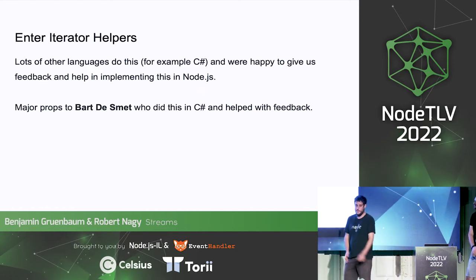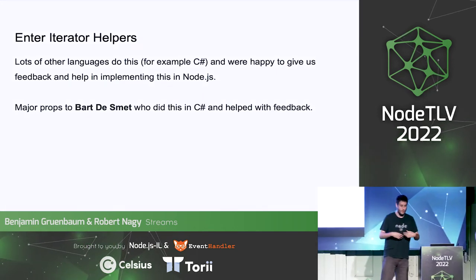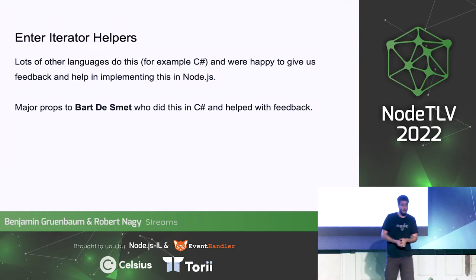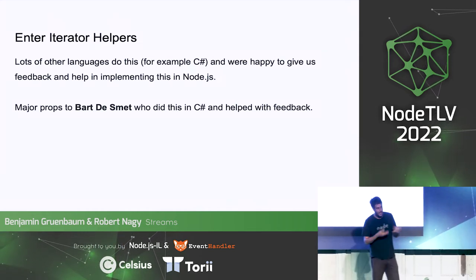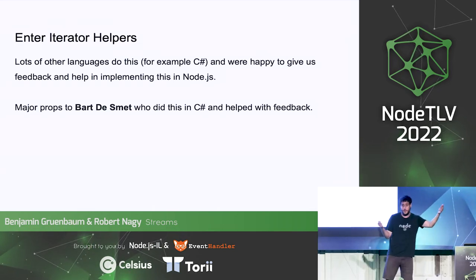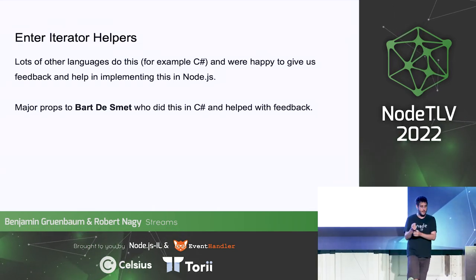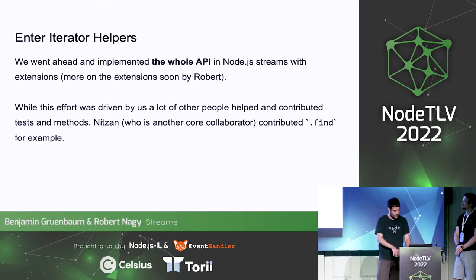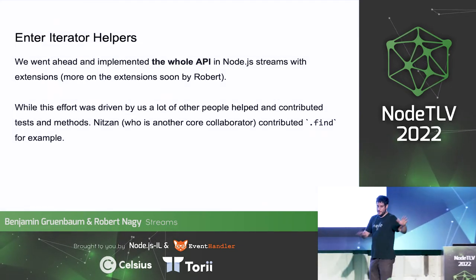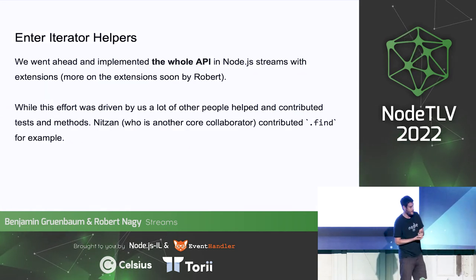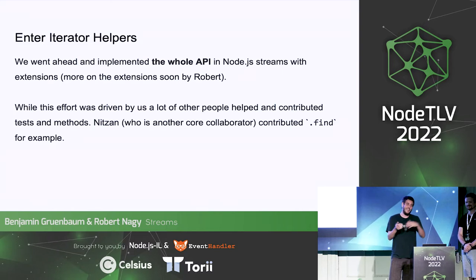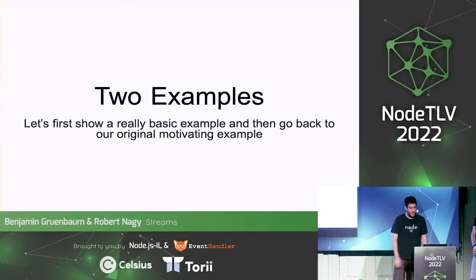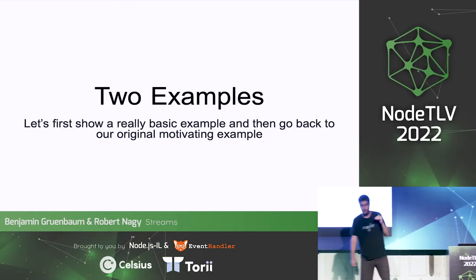I want to shout out Nitsan and the other contributors. A lot of people don't know about the relationship between JavaScript and other languages — it's mostly friendly. When I added cancellation, the C# team was very helpful and gave a lot of feedback. We implemented the full API — everything that iterator helpers has, Node now has. We added every extension to the language, including dot-find contributed by Nitsan who is here today.